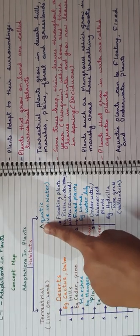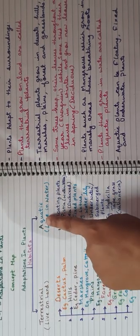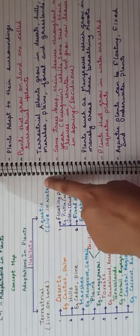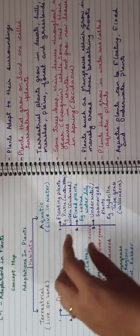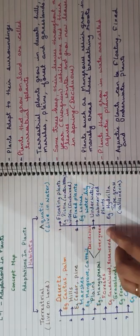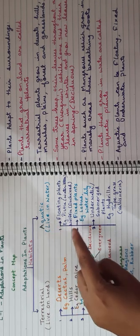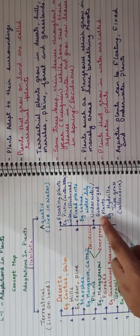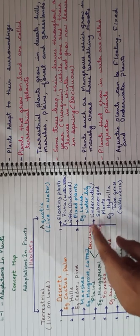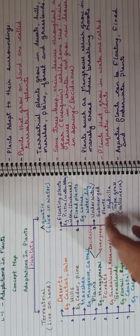Now we are moving toward aquatic plants. Aquatic plants live in water. They are subdivided into three categories: floating plants, fixed plants, and underwater or submerged plants.